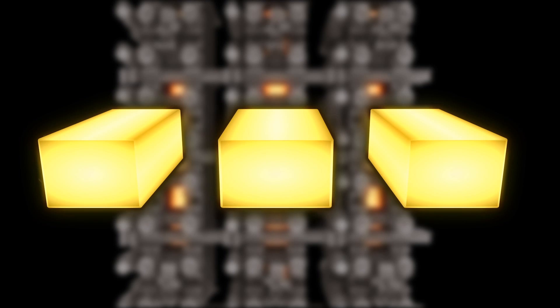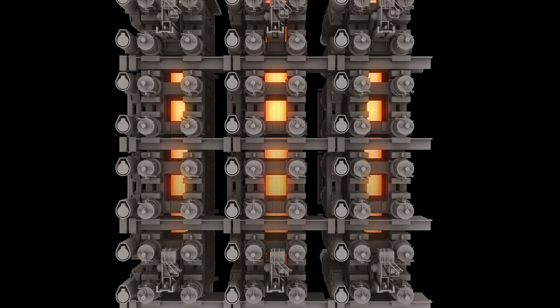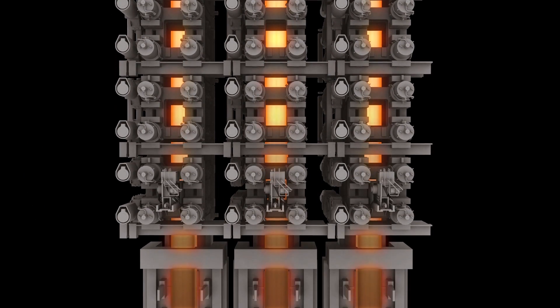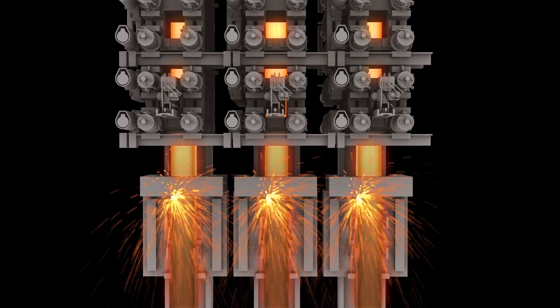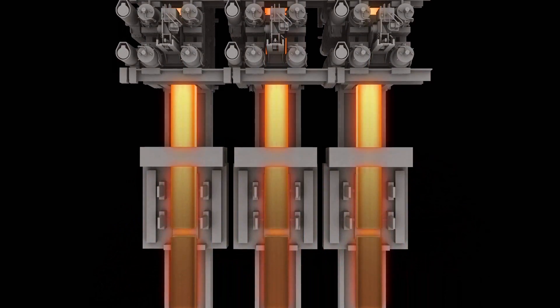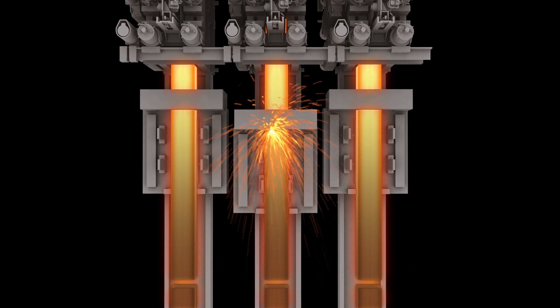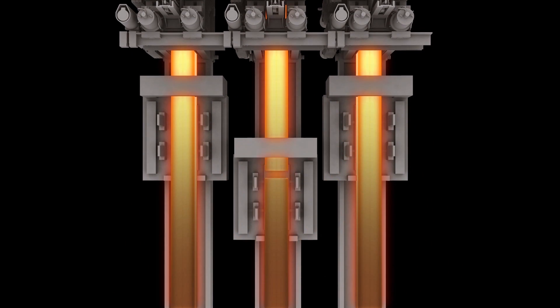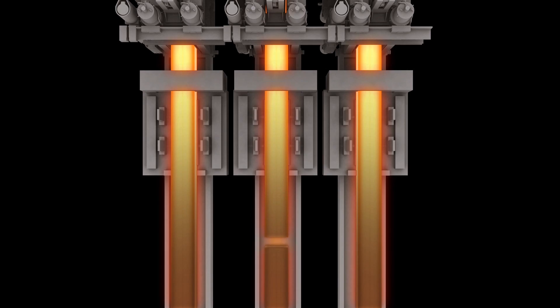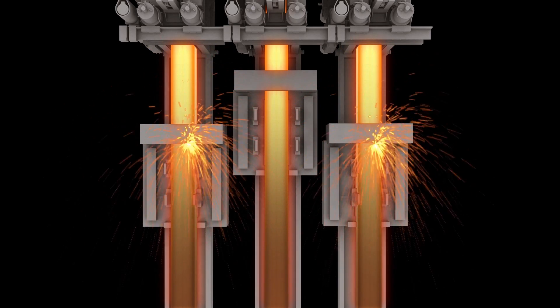After the strand exits the last mechanical soft reduction rolls, we cut it to size using a torch cutting machine. This machine clamps and follows the bloom as it travels to make a straight cut across the bloom face. We can customize the bloom length to allow for optimum cutout in a rolling mill.